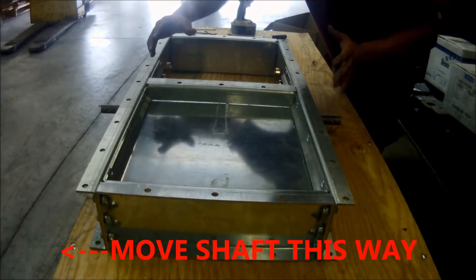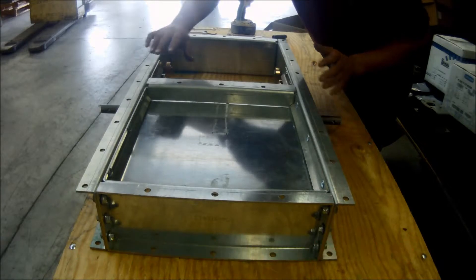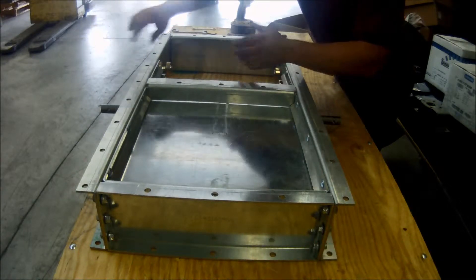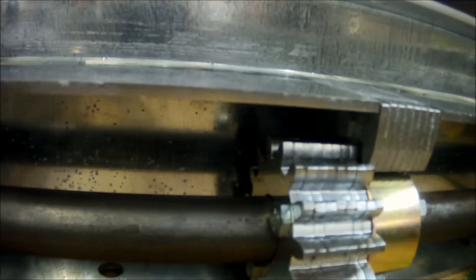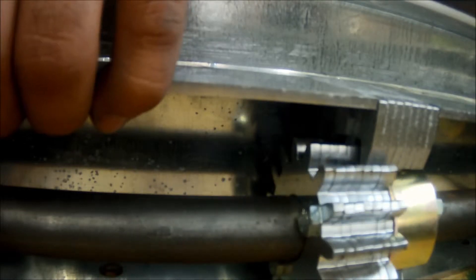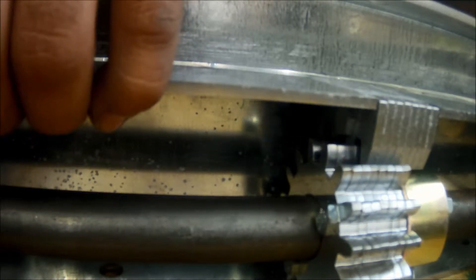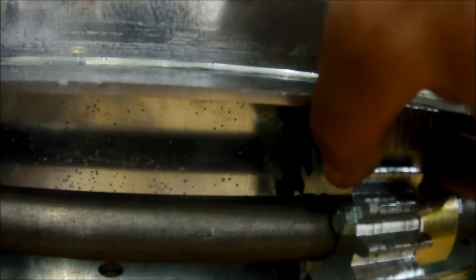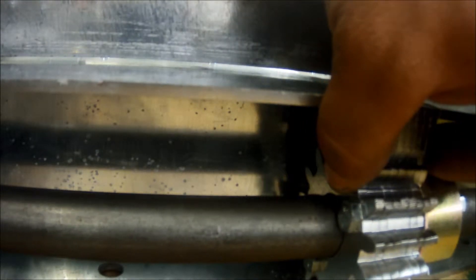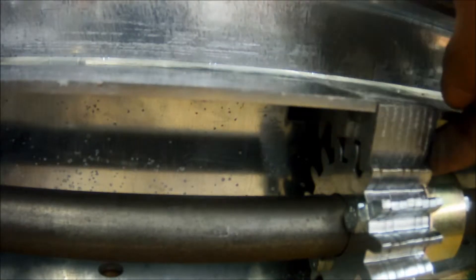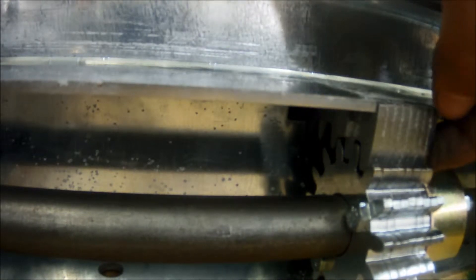The next step would be to move the shaft. We're going to move it in this direction by using a block of wood and a hammer. Once the gear gets close to the rack, you can then use your hands and fingers to align the gears to mesh properly. Be careful that you do not pinch your fingers in this process. Be sure that the gear and the rack are perfectly flush on either side.